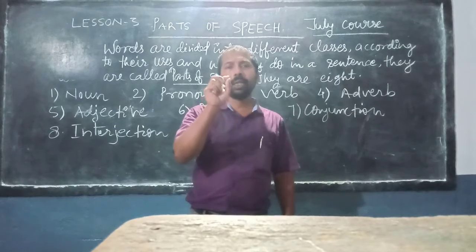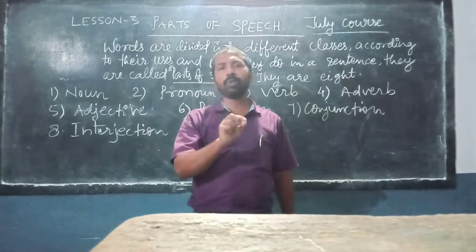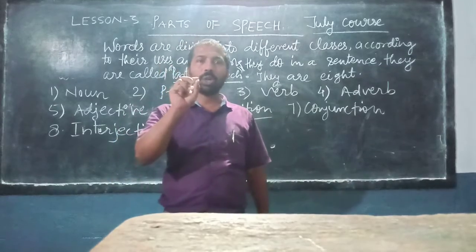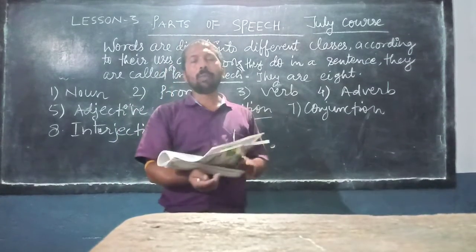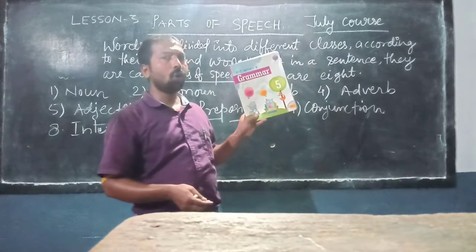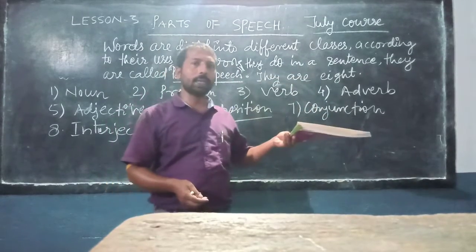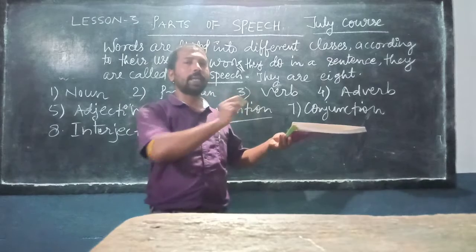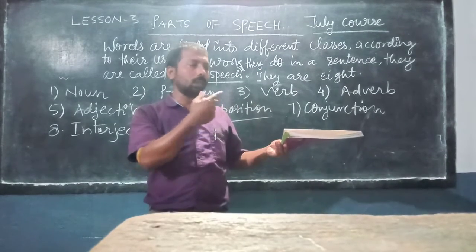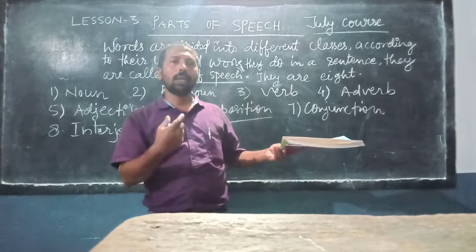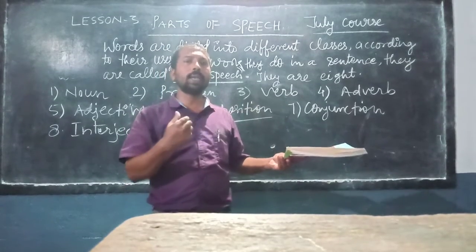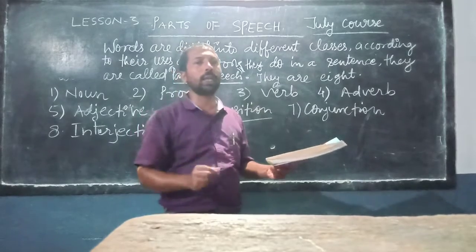Let us see the use of preposition in a sentence. For example: 'The book is on the table.' Here we show the relation between the book and the table, and the word 'on' shows that relation between book and table. So 'on' is the preposition here.